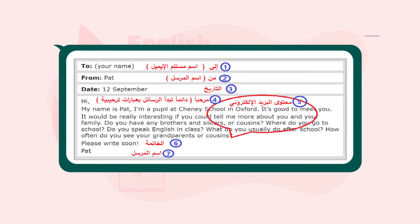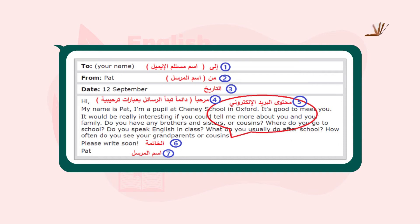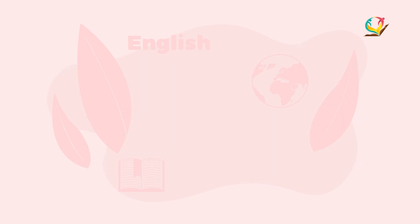Four: Greeting — Hi or Hello. رابعاً التحية، بمرحباً. Five: the content. خامساً محتوى البريد الإلكتروني. Six: the end. سادساً الخاتمة، كما نشاهد في هذا الإيميل، like the sentence: "Please write soon." Seven: the name of the sender. سابعاً وأخيراً اسم المرسل.